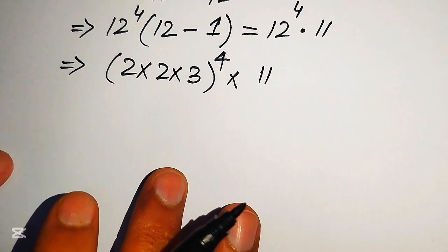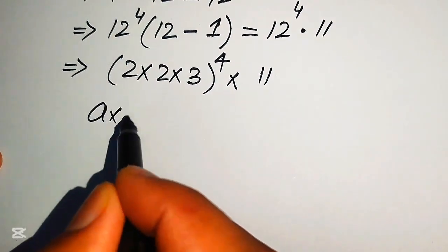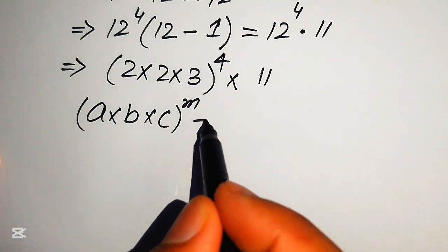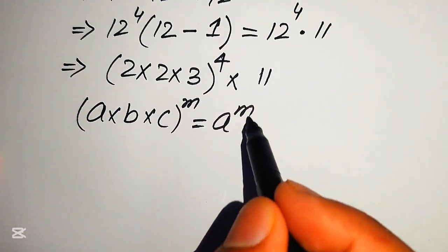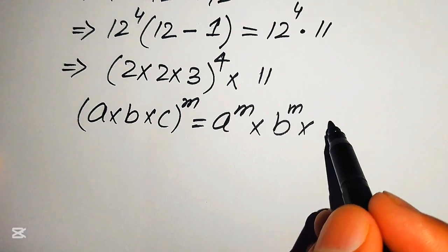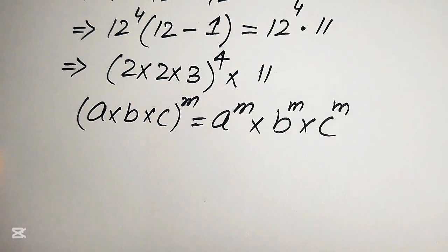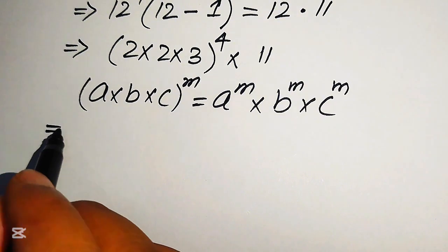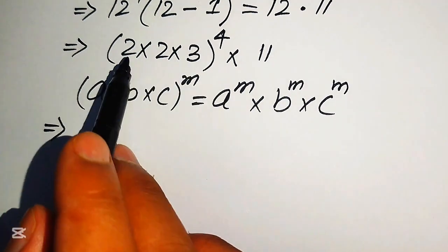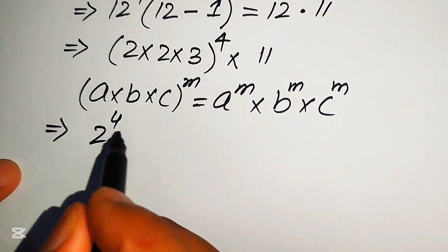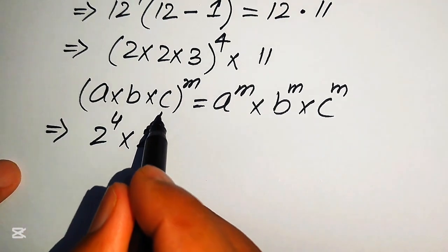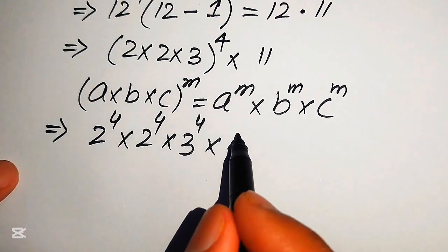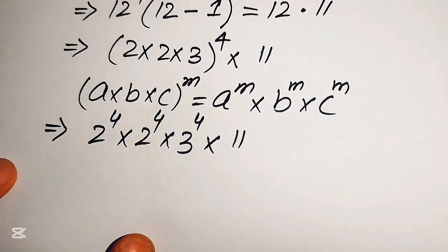In the next step we apply another exponent law: if you have a multiplied by b multiplied by c, all to the power of m, it equals a to the power of m, multiplied by b to the power of m, multiplied by c to the power of m. Applying this, we get 2 to the power of 4, multiplied by 2 to the power of 4, multiplied by 3 to the power of 4, and then multiplied by 11.